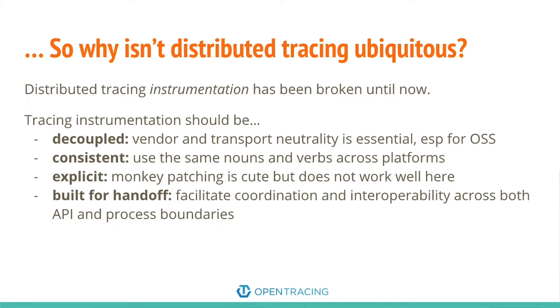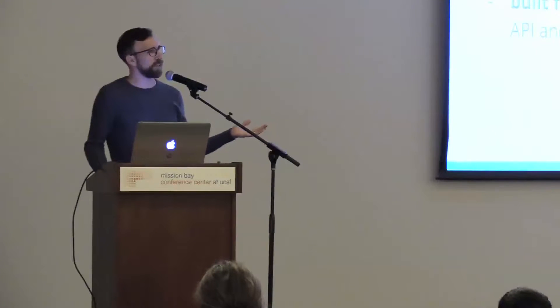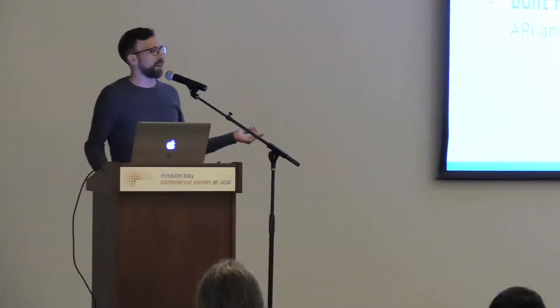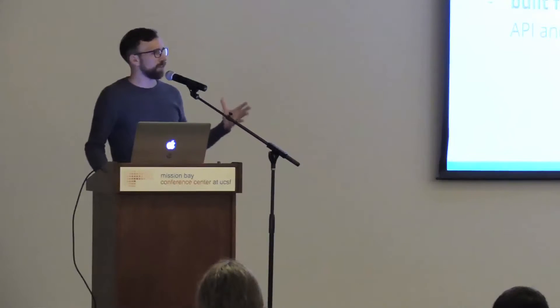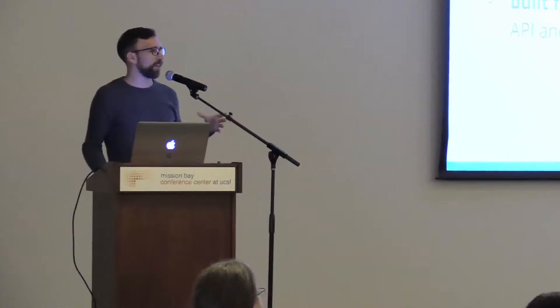It's also really important that it's consistent, because distributed systems use many languages. Python is great, but a lot of production systems — certainly those with web or mobile — have at least three languages right off the bat. Add Go, Node, Java, or whatever, and pretty soon you have a bunch of different languages and platforms. If the nouns and verbs you're using aren't consistent across these platforms, it's very difficult to get a consistent story from the macro tracing perspective. Unfortunately, you need that for it to work.